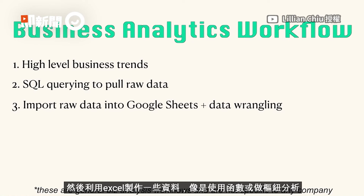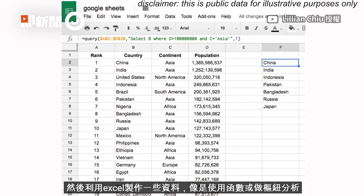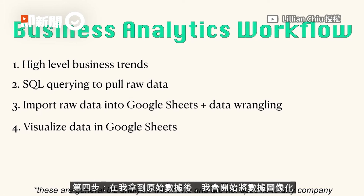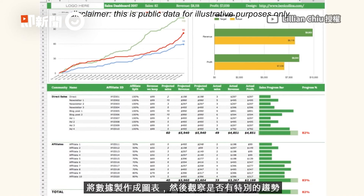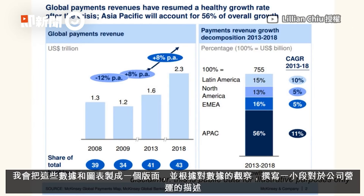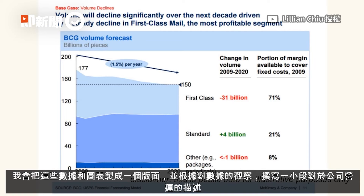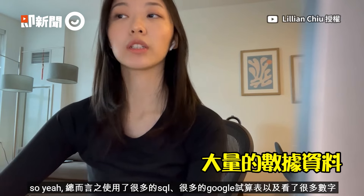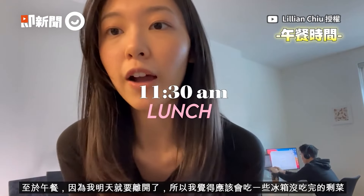Step three: once I have the raw data, I import it into Google Sheets and do my Excel tricks like VLOOKUP, pivot tables, and formulas — this step I call data wrangling. Step four: from there, I start visualizing the data, turning them into graphs to see if there are any interesting trends. Step five, which is also the most important part, is to put these charts and data into a deck and develop a narrative on how our business is doing based on these data and insights. In a nutshell: a lot of SQL, a lot of Google Sheets, a lot of looking at numbers.